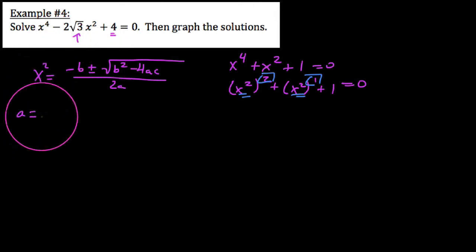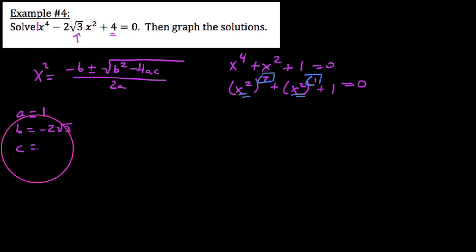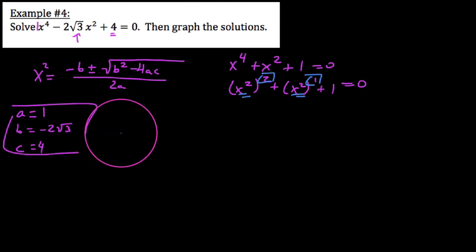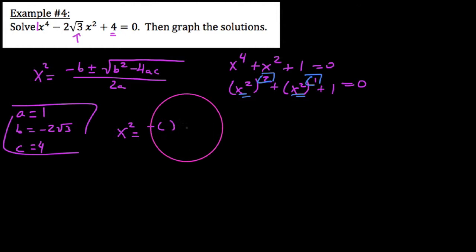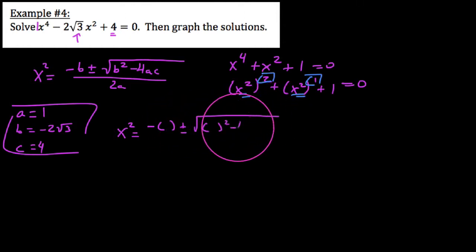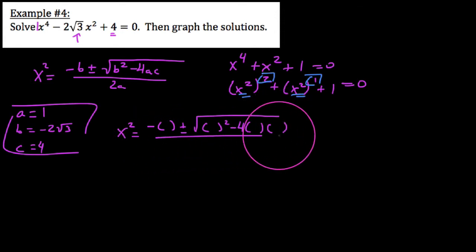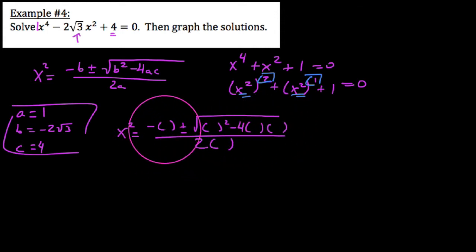In this case, we get an a value of 1, a b value of negative 2√3, and a c value of 4. Knowing these three things, we're going to go ahead and pursue this. We say x² is equal to negative b plus or minus the square root of b² minus 4ac, all over 2a, and I'm going to fill all this stuff in now.